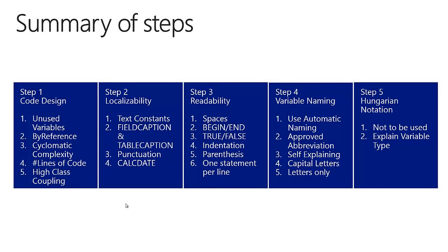In this video we went through the CAL coding guidelines in five steps: code design, localizability, readability, variable naming, and Hungarian notation. Thank you for watching, and I look forward to seeing you again in another episode of the How Do I video series for design patterns in Microsoft Dynamics NAV.